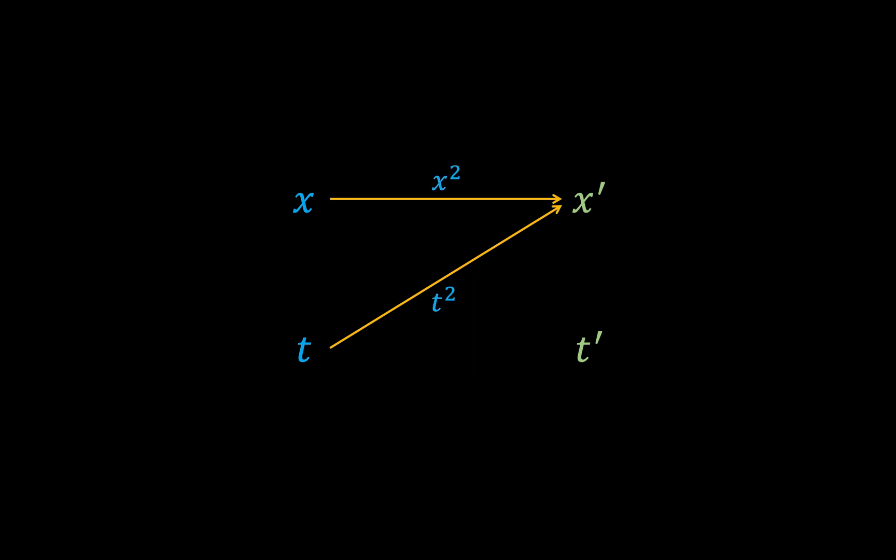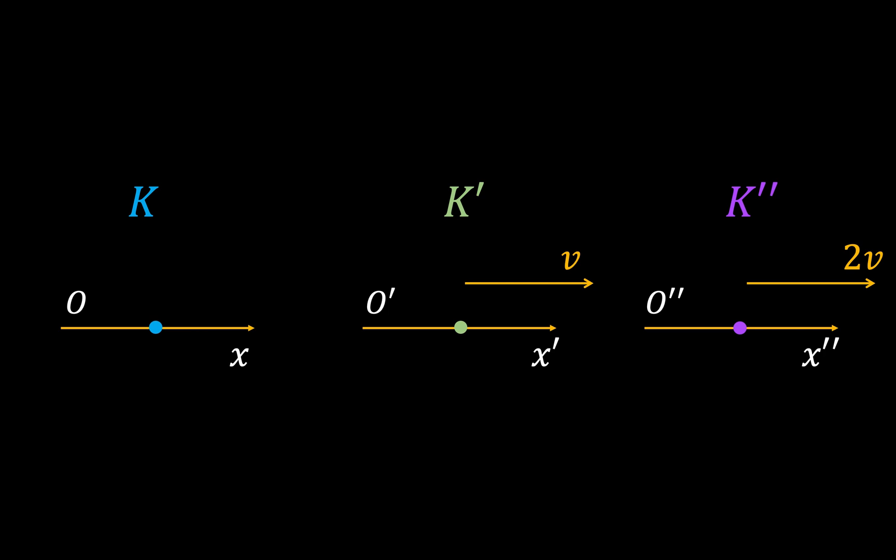However, if there was a square mapping from K to K', then the reverse mapping would necessarily have to be some kind of square root mapping. This violates the principle of relativity, because now the mapping from K to K' does not have the same form as the mapping from K' to K. How could this be the case if there were no privileged reference frame? How would we decide in which direction the square mapping goes and in which direction the square root mapping goes?